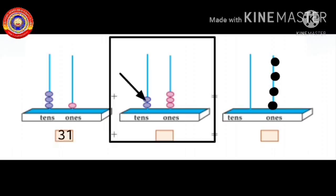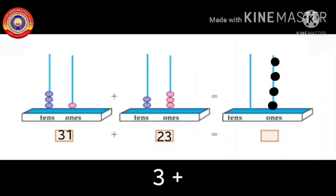In the second one, 2 beads are there. So total number of tens beads are 3 plus 2 is equal to 5. So you have to draw 5 beads in the tens place. Now, the number is 54.